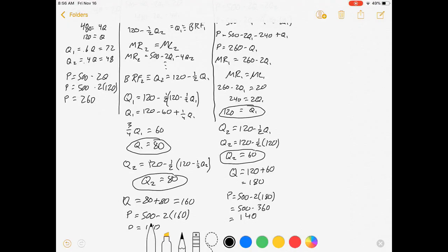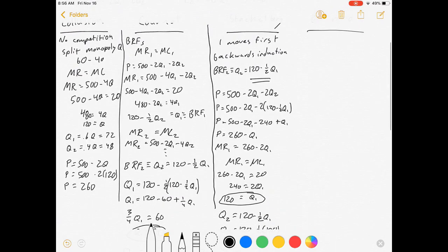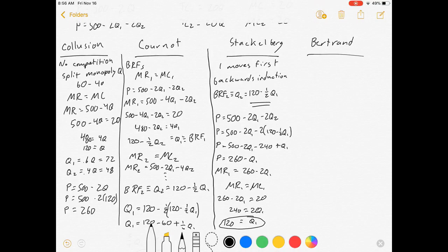Three down, one to go. Hopefully the distinction between where you do your substituting in Cournot and Stackelberg makes sense. Now Bertrand is a totally different approach where instead of competing by quantity we compete in price, and each firm will try to undercut the other firm's price.